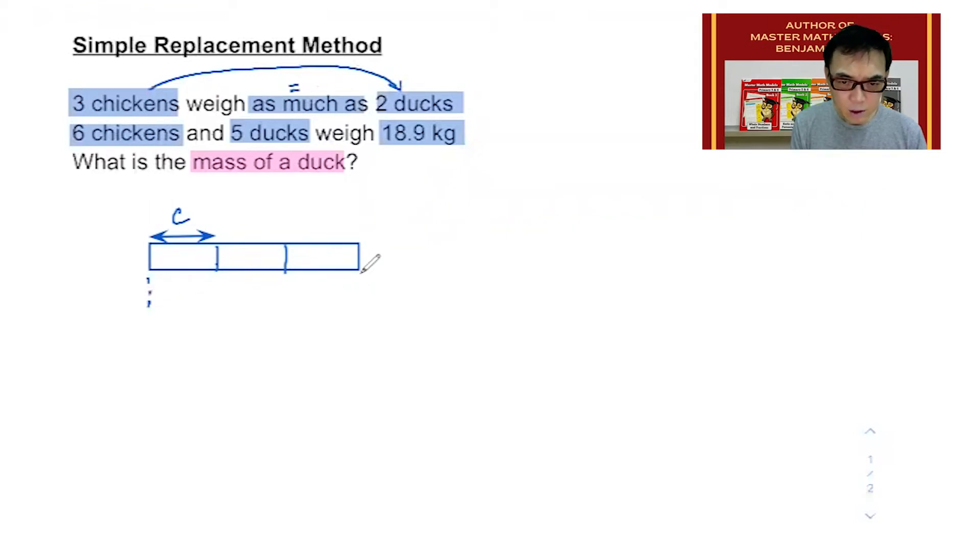If they are equal, I will be able to pull this model down and draw a model made up of 2 boxes, since it represents 2 ducks. So this would be the 2 ducks. Each box represents 1 duck.